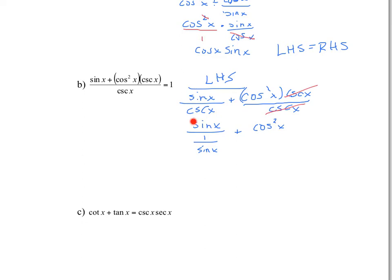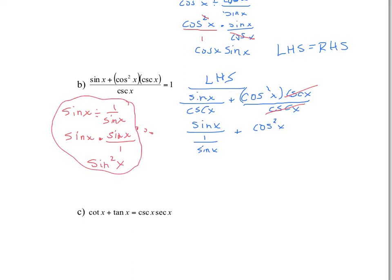I'm going to manipulate the sine x divided by one over sine x part. That equals sine x times sine x over one, which is sine squared x. So now I have sine squared x plus cos squared x on the left-hand side. If you remember our first Pythagorean identity, this is by definition equal to one. So the left-hand side is equal to the right-hand side.